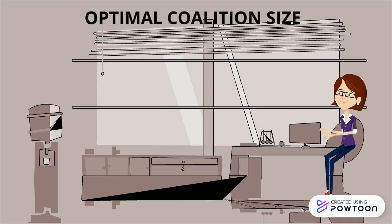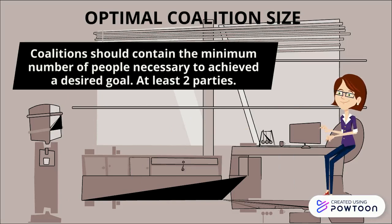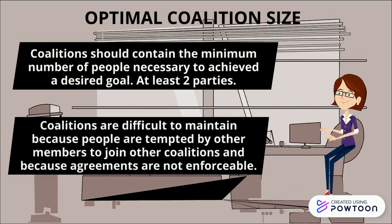Optimal coalition size: a coalition should contain the minimum number of people necessary to achieve a desired goal — at least two parties. Larger coalitions are difficult to maintain because people are tempted by other members to join other coalitions, and because agreements are not enforceable.